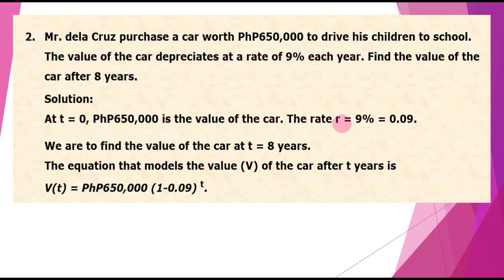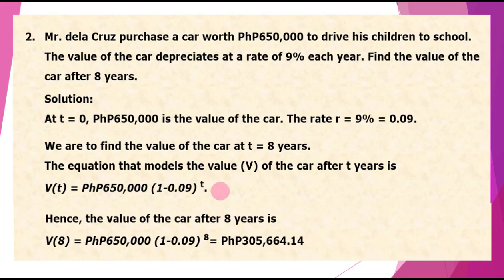The rate R is 9%, converted to decimal: 0.09. We are to find the value of the car at T equals 8 years. The equation that models the value V of the car after T years is V(T) equals 650,000 times the quantity 1 minus the rate, raised to T. Hence, the value of the car after 8 years is V(8), substituting T equals 8, giving us 305,664 pesos and 14 centavos.